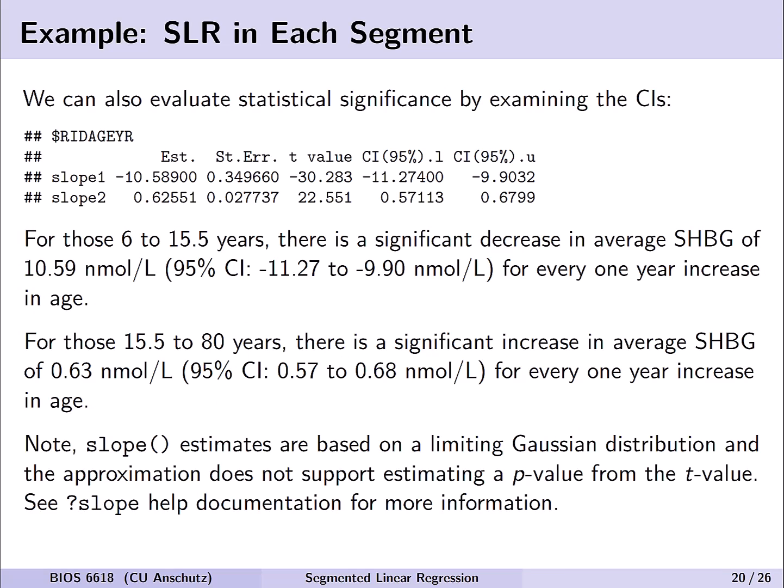There were no p-values on the previous slide, but we can still interpret statistical significance using confidence intervals provided automatically in the summary output. For those 6 to 15.5 years, there is a significant decrease in average SHBG of 10.59 nanomoles per liter — with a 95% CI of approximately -11.27 to -9.9 — for every one year increase in age. There is likewise a significant increase for those 15.5 to 80 years with its corresponding confidence interval.